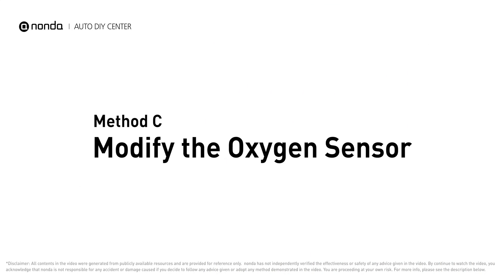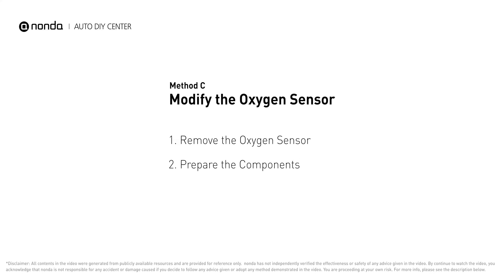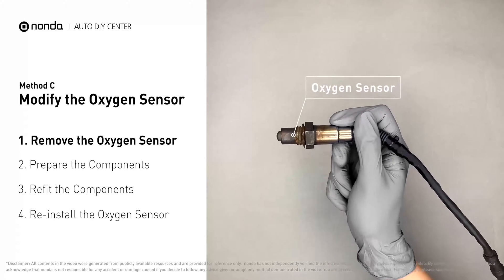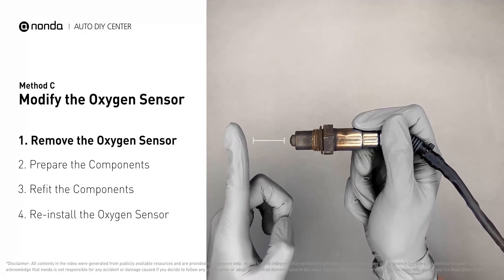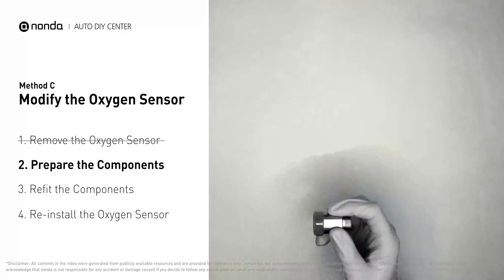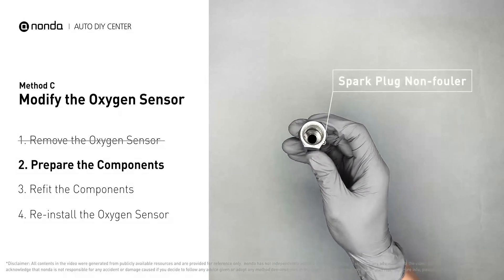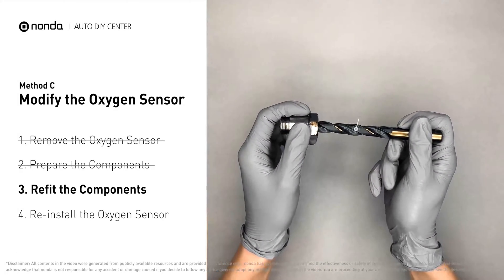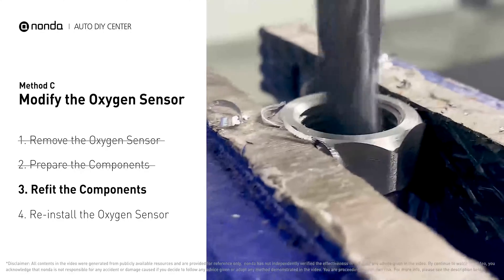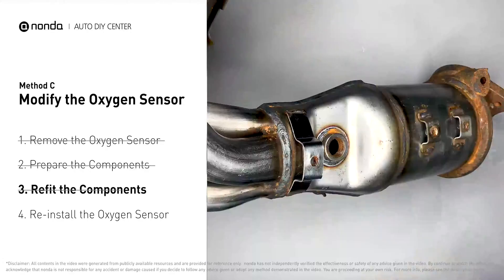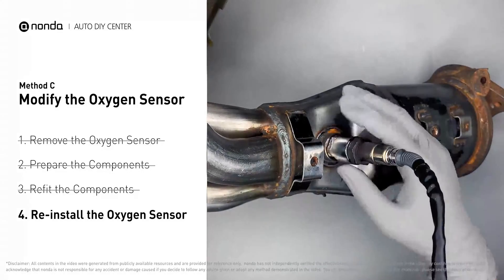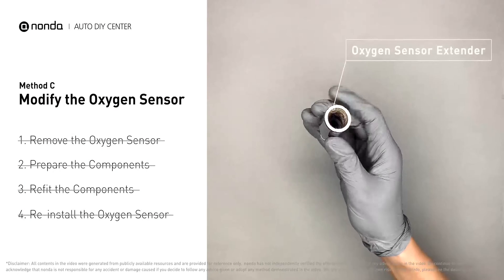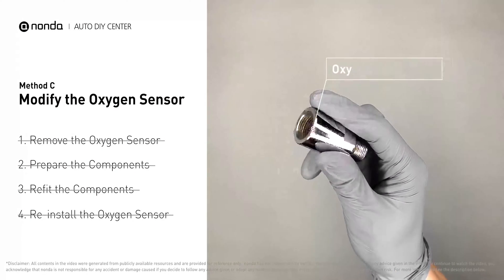Method C: modify the oxygen sensor. You can remove the oxygen sensor from the converter and fix P0430 by putting some extra space between the sensor and the converter. First, get a spark plug non-fouler, then use a half-inch drill to refit it. By doing this, the spark plug non-fouler now has enough space to fit into the oxygen sensor. Put them together and put them back on the catalytic converter. If refitting the component is too complicated, you can also get parts like an oxygen sensor extender or oxygen sensor socket to create that space.